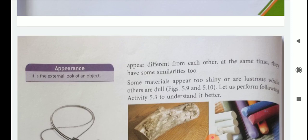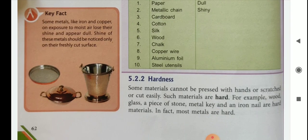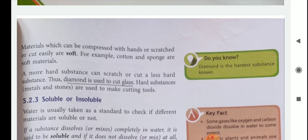The next property is hardness. Some materials are hard and some are soft. Hard materials include wood, glass, a piece of stone, a metal key, and an iron nail. Examples of soft materials are cotton and sponge. A harder substance can scratch or cut a less hard substance — thus diamond is used to cut glass, and it is the hardest substance.